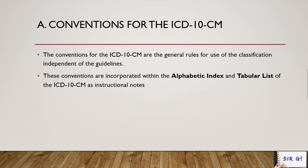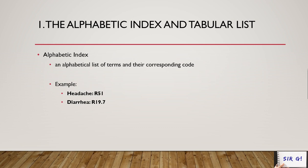Let's start with the alphabetic index and the tabular list. The alphabetic index is the first part of your book — it lists terms alphabetically from A to Z. Next to each term is the corresponding code. When you receive a medical record, the physician documents the final diagnosis — for example, headache or pneumonia — and you locate that term in the alphabetic index.